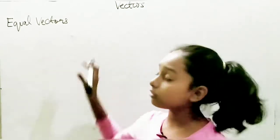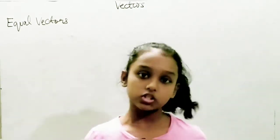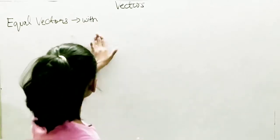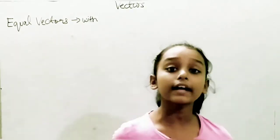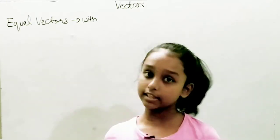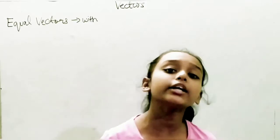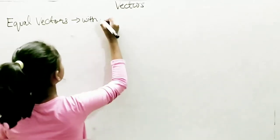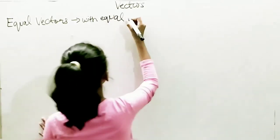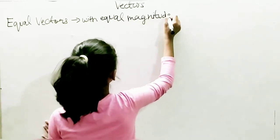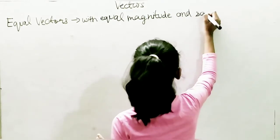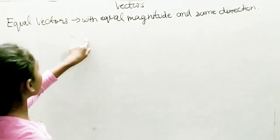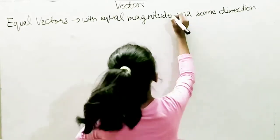I have written 'equal vectors' and now I am going to write the definition. Equal vectors are those vectors having the same magnitude and same direction. If their magnitude and direction both are same, they are called equal vectors — with equal magnitudes and same direction.